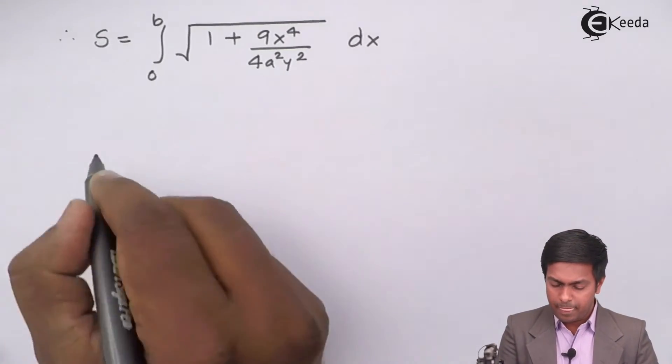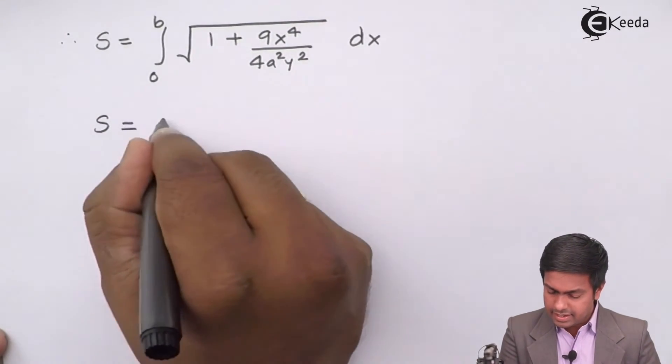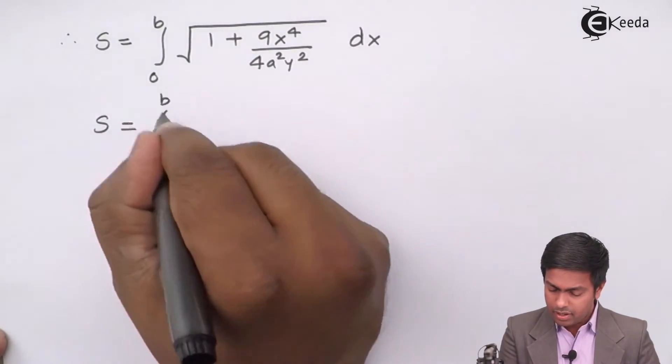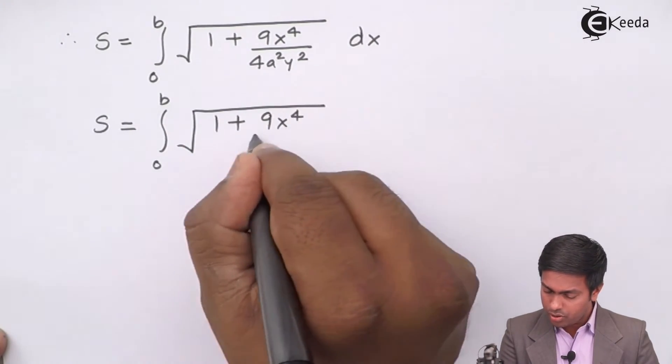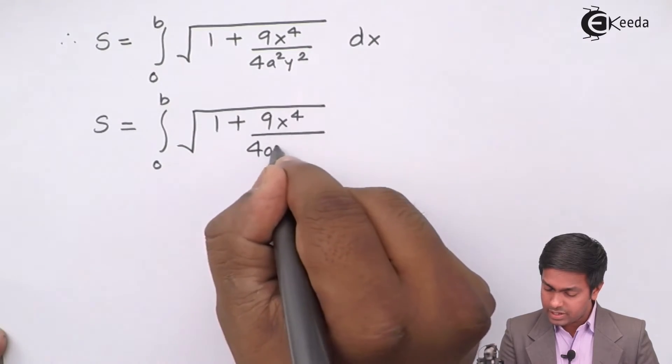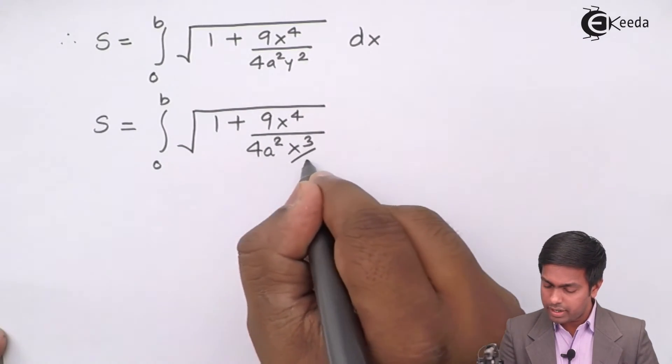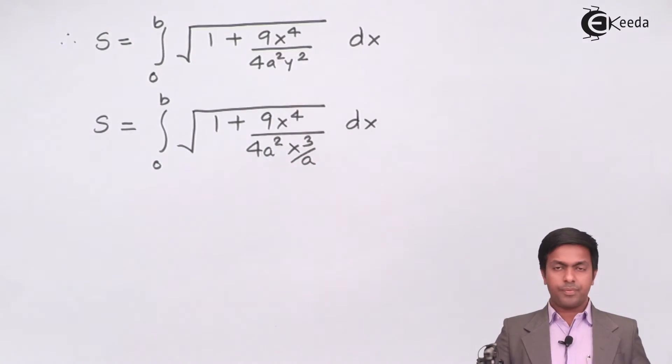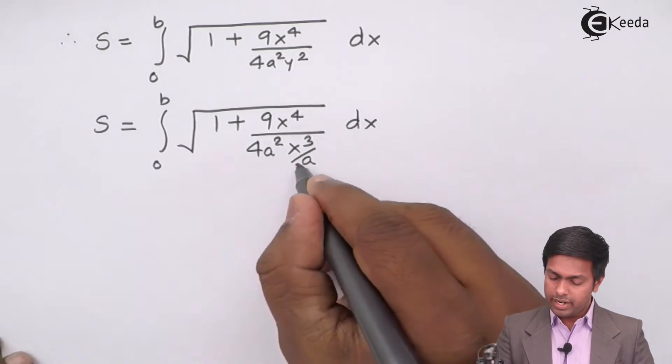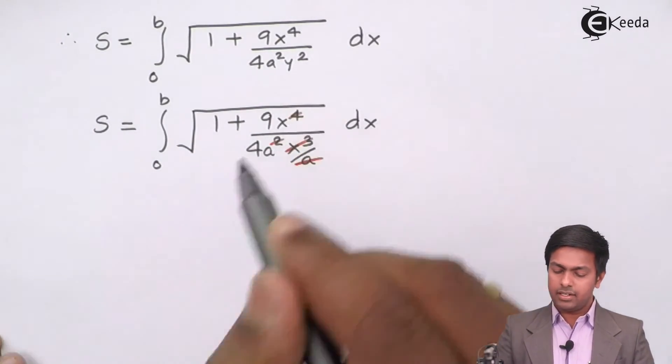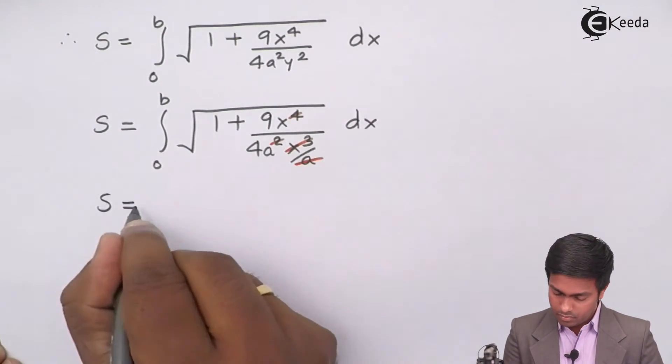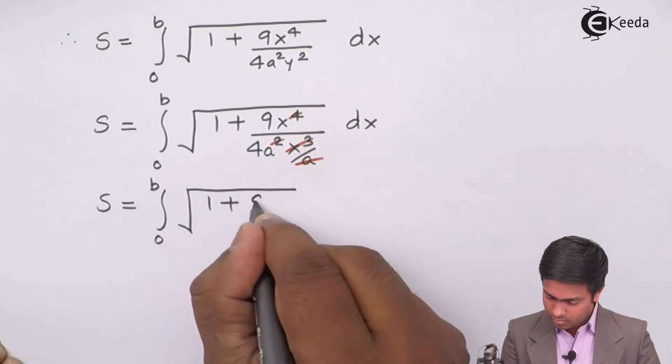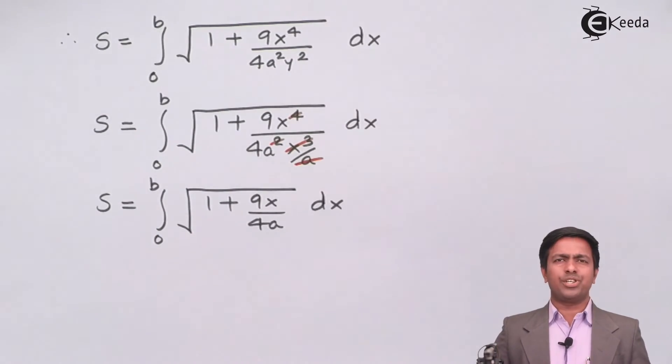So we will get s as integration 0 to b under root 1 plus 9x raise to 4 upon 4 a square and this is x cube upon a dx. Now this 1 a will be cancelled, x cube cancelled. So here we will get 9x, here we will get 4 a.